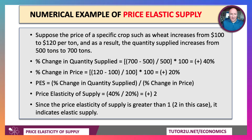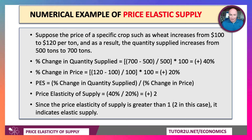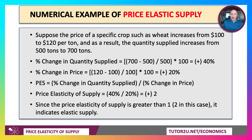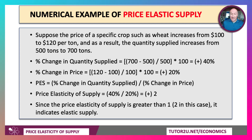Now let's look at price elastic supply. Suppose the price of wheat goes up from $100 per tonne to $120 — that's a 20% rise in the price of wheat. And as a result, the quantity supplied increases from 500 to 700 tonnes, which is a 40% increase in supply. Putting those numbers into the formula: elasticity equals plus 40 over plus 20 equals plus 2. Because it's greater than 1 — 2 in this case — that suggests price elastic supply.